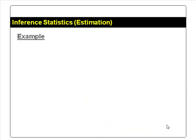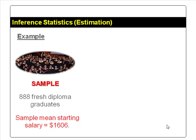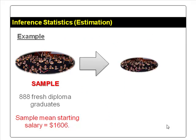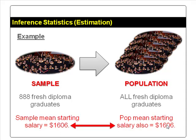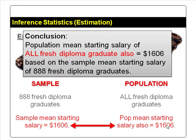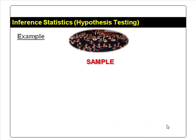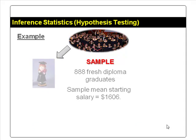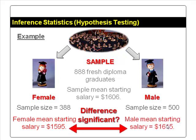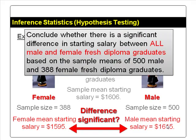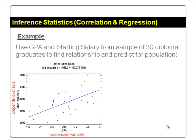In inferential statistics, we use sample statistics as point estimates of population parameters. For example, the sample mean starting salary of the 888 fresh diploma graduates is $1,606, so we conclude that the population mean starting salary of all fresh diploma graduates is also $1,606. We also use sample statistics to compare means — for example, comparing the mean starting salaries of male and female diploma graduates to find whether the difference is significant. We also use sample data to find relationships between variables and make predictions, such as predicting the starting salary of a new diploma graduate given their GPA score.